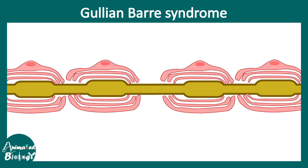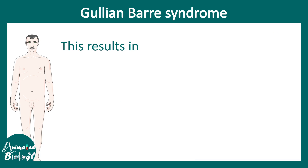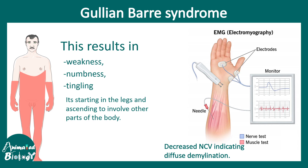Now let's talk about Schwann cells in the context of Guillain-Barré syndrome. This is an acute, rapidly progressive demyelinating autoimmune disorder of the peripheral nerves, where peripheral nerves are affected due to an antibody known as GM1 ganglioside autoantibody. The immune system mistakenly recognizes Schwann cell proteins and produces autoantibodies against them, eventually damaging these Schwann cells and the myelination, leading to neuropathies. Symptoms include weakness, numbness, and tingling starting from the legs and going upward. Electromyography shows a decrease in nerve conduction velocity because the Schwann cell insulation is now faulty.